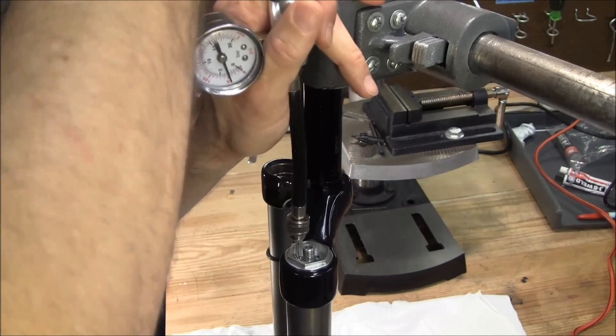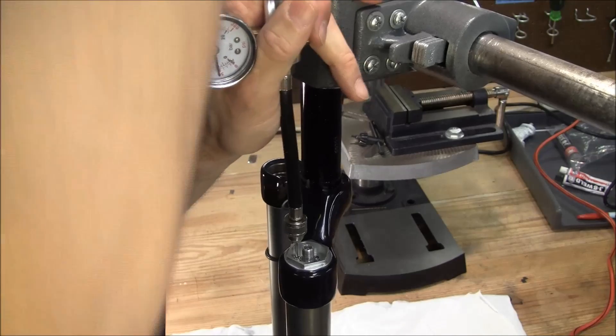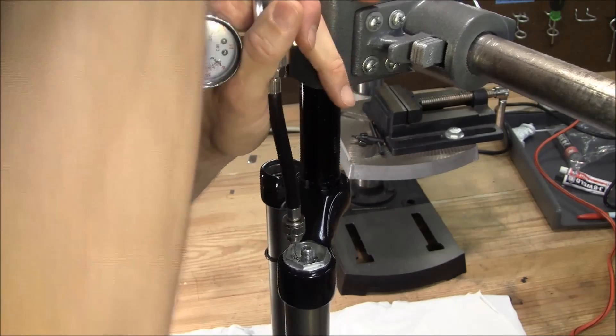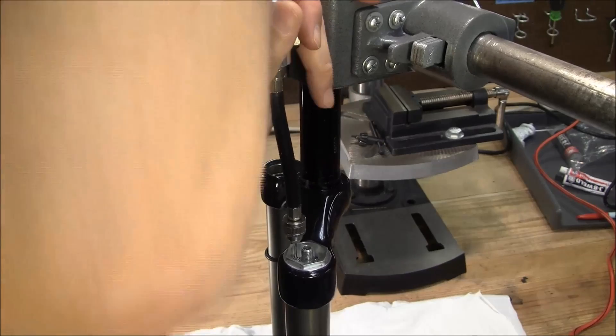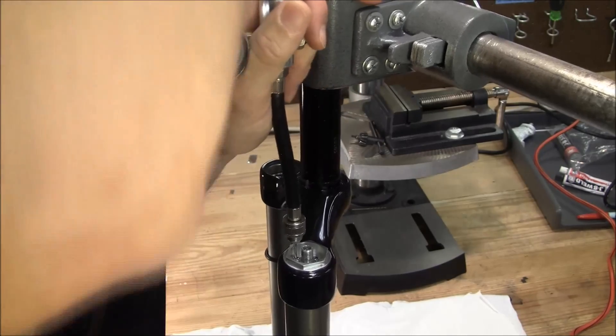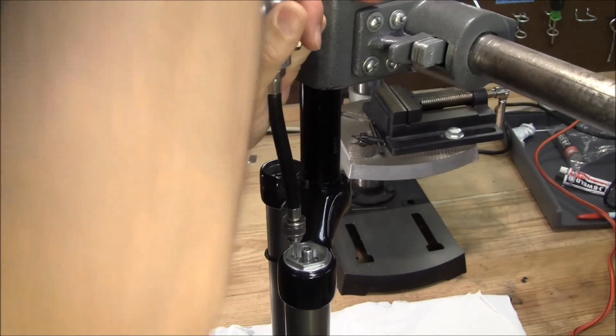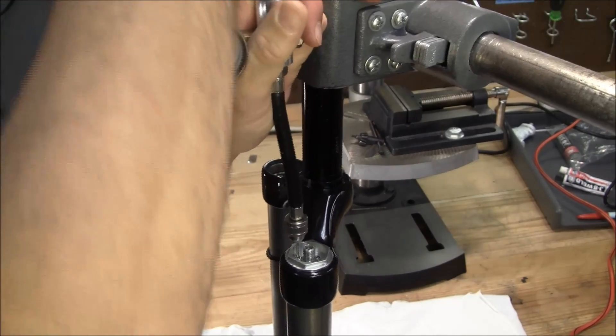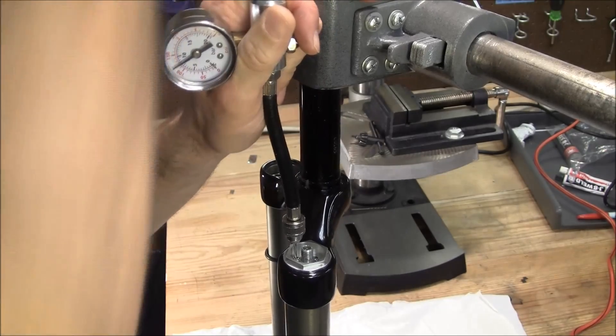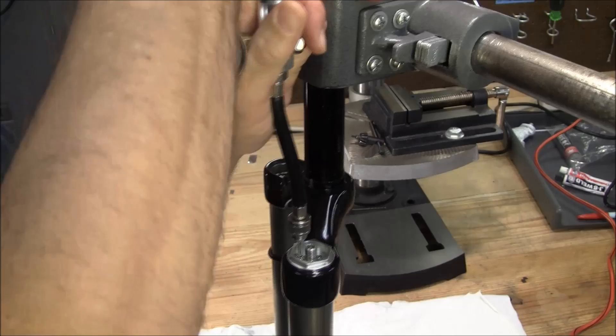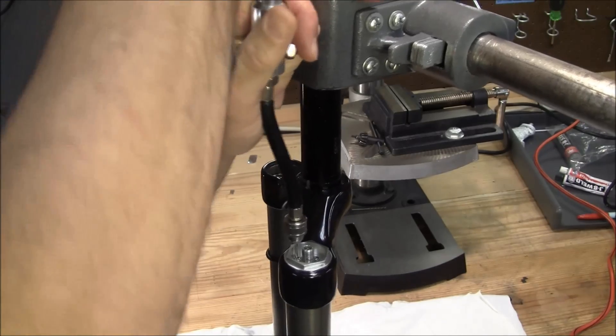One main difference between the do-it-yourself tool and the actual FOX tool is that our tool does not have a valve core in it. So in the service guide, it shows the person disconnecting the pump and then later disconnecting the tool. If you do that, you're going to let all the air back out of the IFP chamber. So what we will do is we will spin the entire assembly off at once.